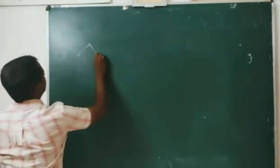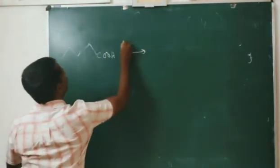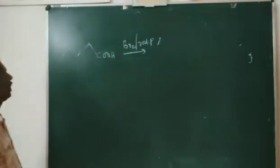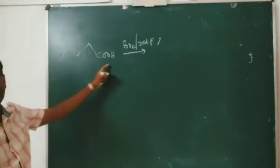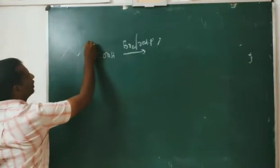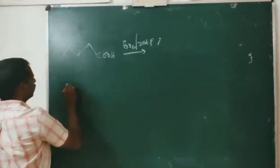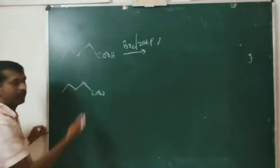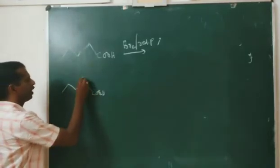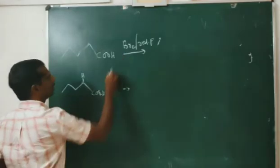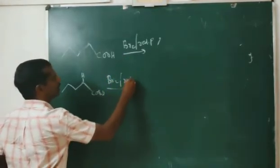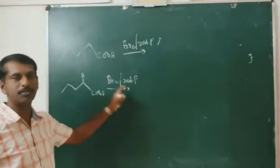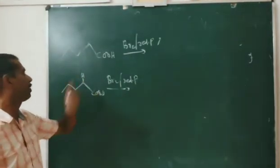For example, suppose your exam question gives you a cyclic carboxylic acid treated with bromine in the presence of red phosphorus and asks for the product. We recognize this is a carboxylic acid, the carbon attached to the C=O group is the alpha carbon, and there is a hydrogen atom on it — a CH₂ group. The reagent is Br₂ and red phosphorus, so this is definitely an HVZ reaction, and the alpha hydrogen atom will be replaced by bromine.